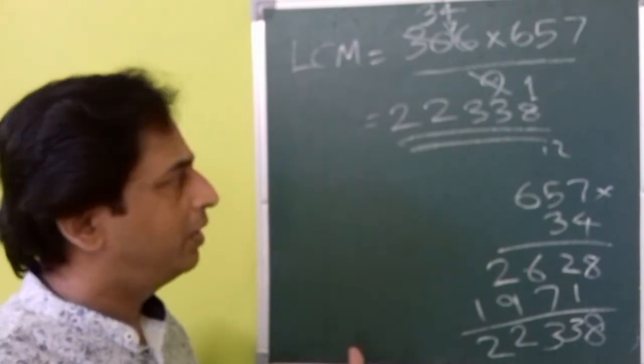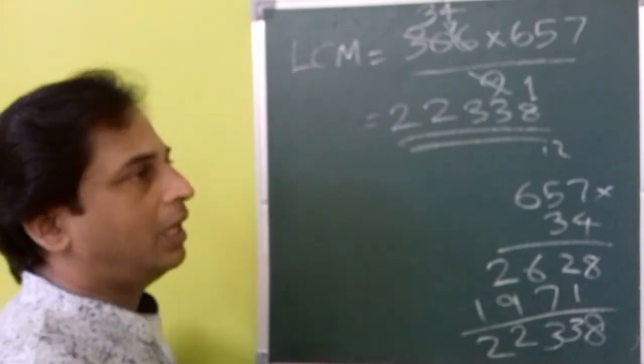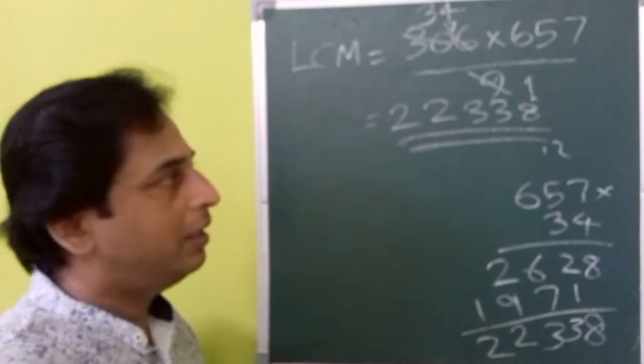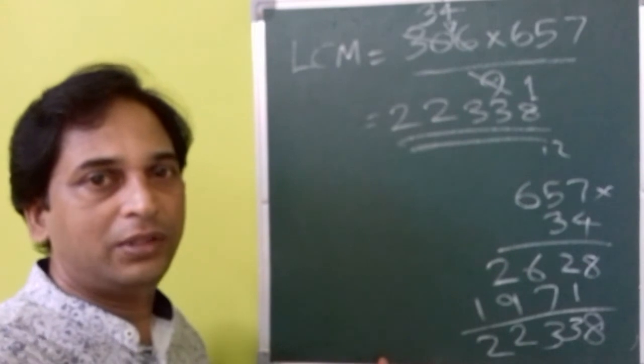Hope this is clear. It is a very simple concept. We need to start with LCM multiplied by HCF is equal to the product of the numbers. Then you can find what is unknown.